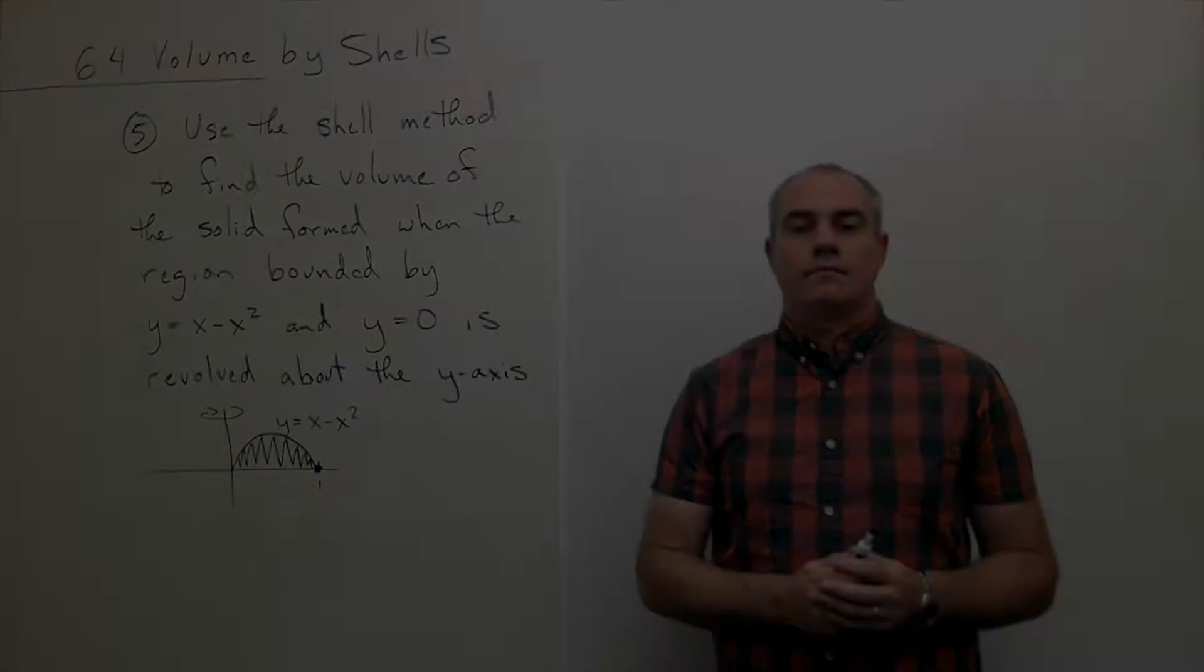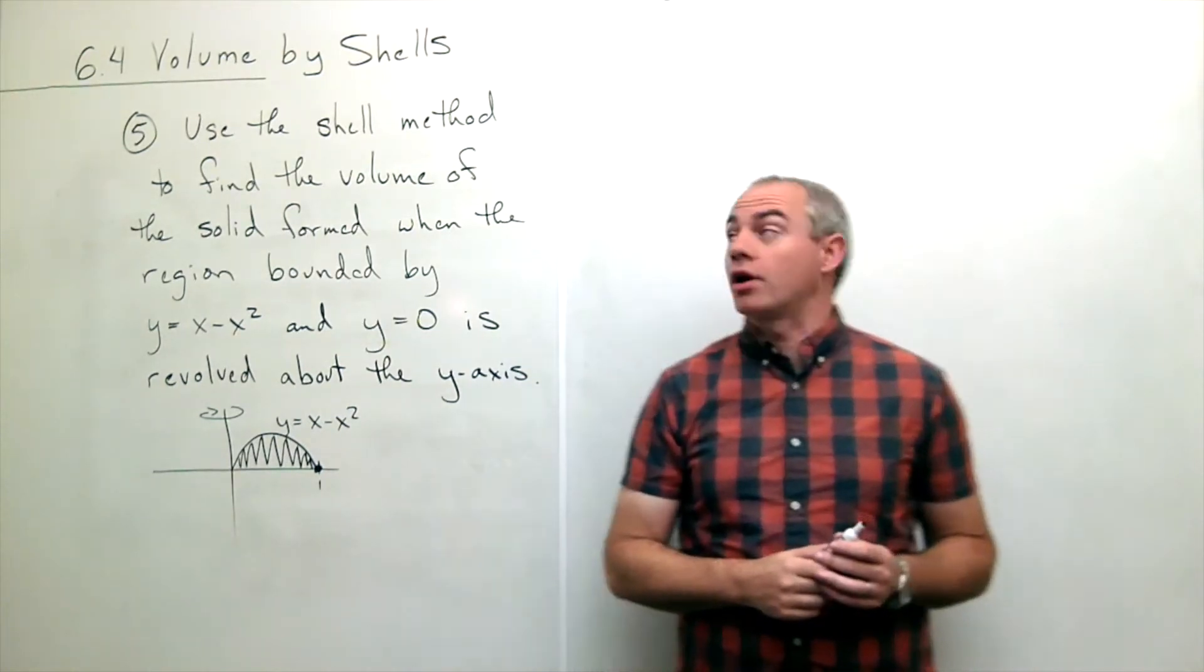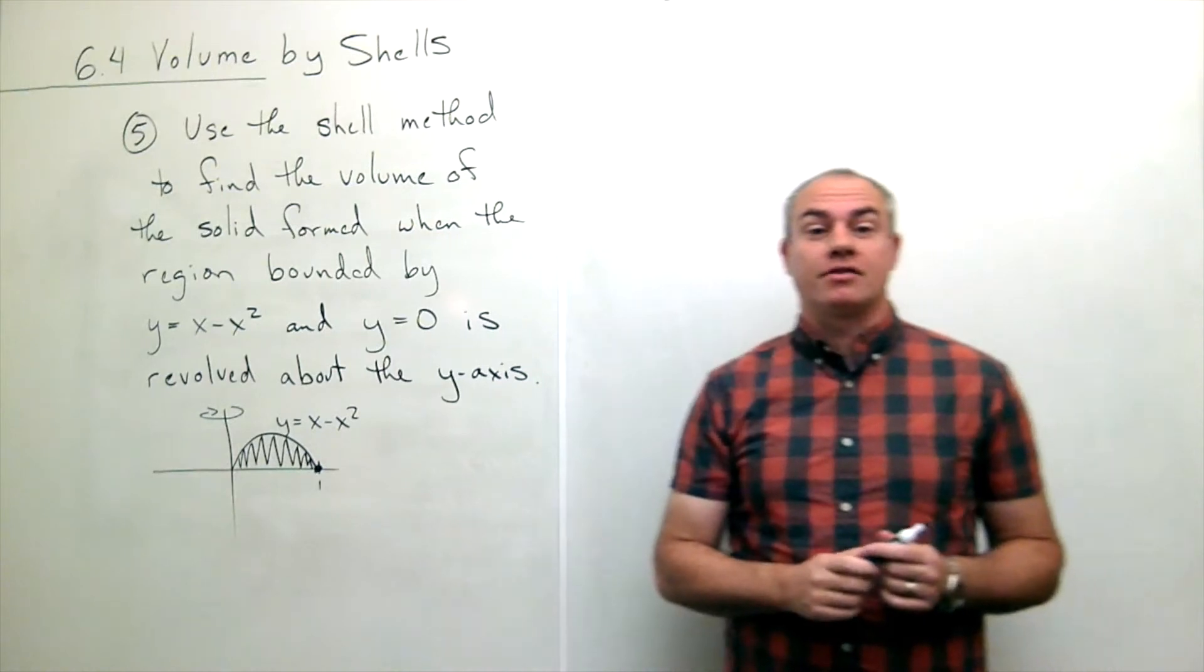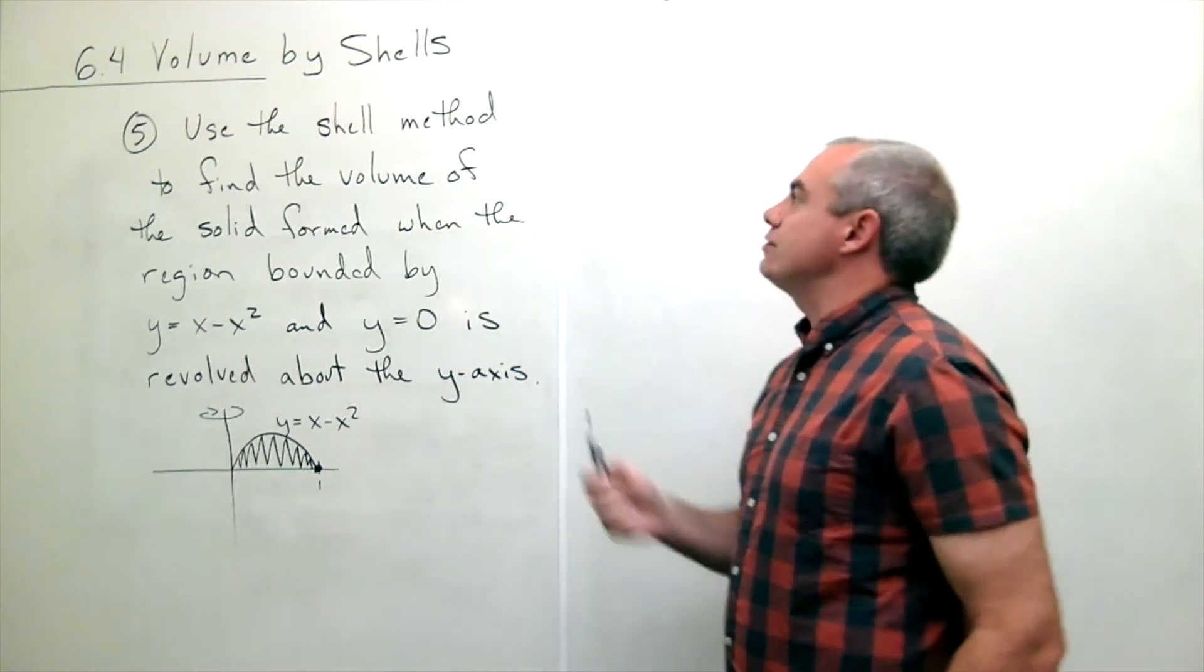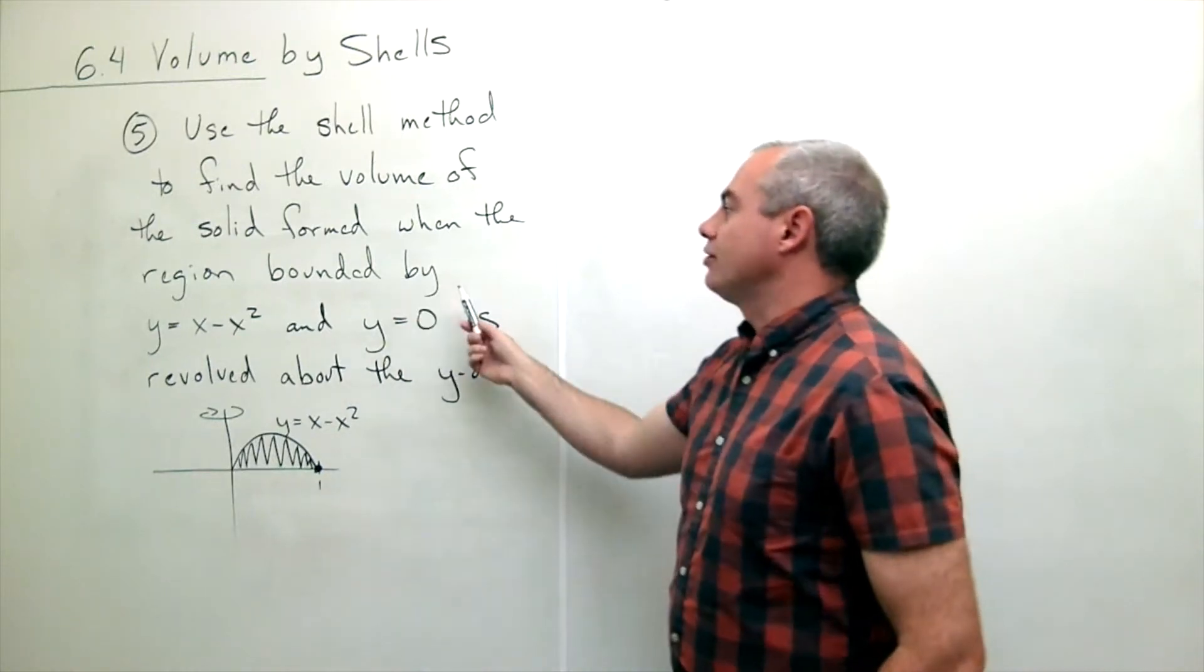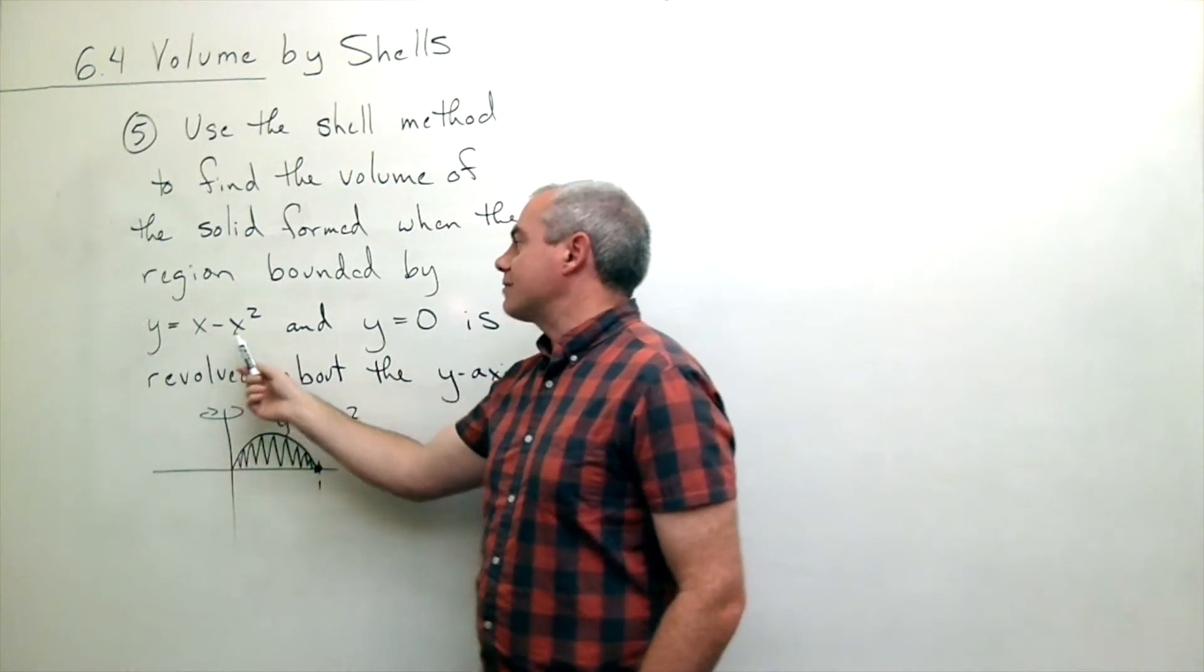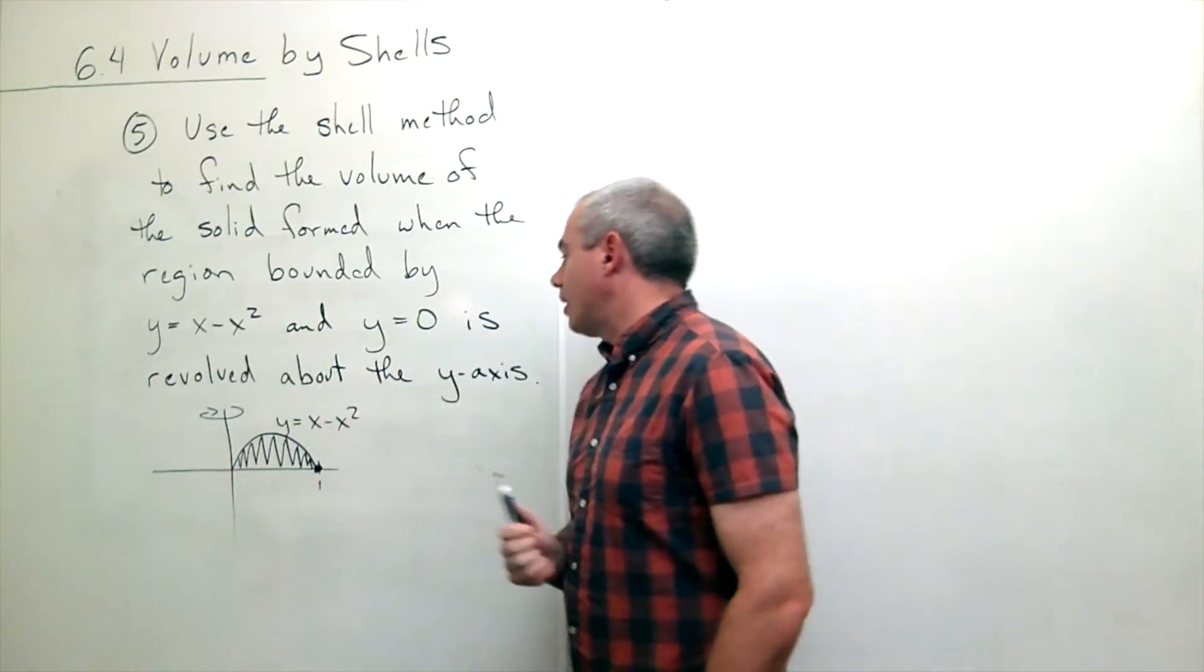I'm the Calculus Professor and today I'll be talking to you about volume by cylindrical shells. Welcome back. Today we'll be talking about section 6.4 volume by shells and we're going to start with problem number five that says use the shell method to find the volume of the solid formed when the region bounded by y equals x minus x squared and y equals zero is revolved about the y axis.